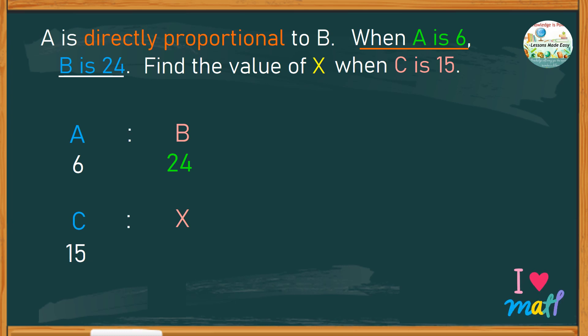It means when one quantity is increasing, the other increases in the same proportion. Look at this, from 6 to 24, what number do we use to multiply by 6 that will give us a product of 24? The obvious answer is 4. Therefore,